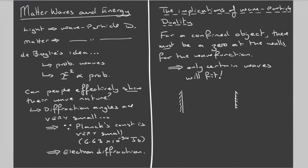Imagine an object confined between two walls. One allowed wave fits with zeros at both ends — when you square it to get the probability function, it's zero at the edges where the confining walls are, which makes sense. However, a wave that is not allowed is one that does not have a zero at both confining walls.